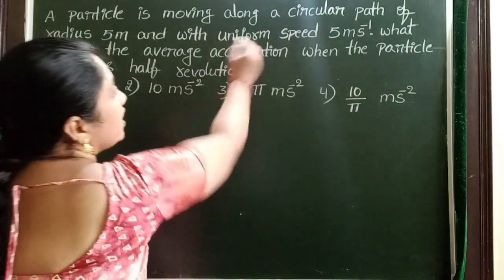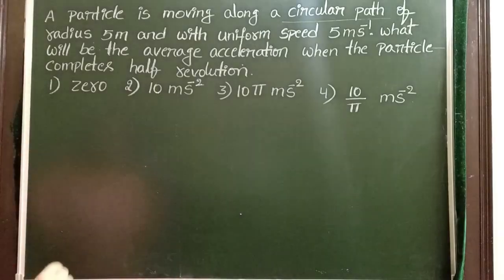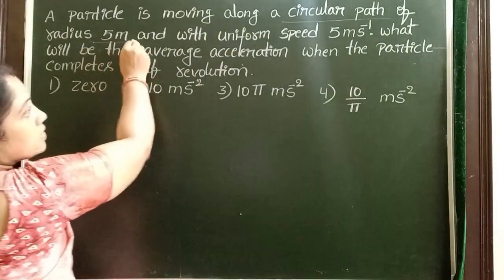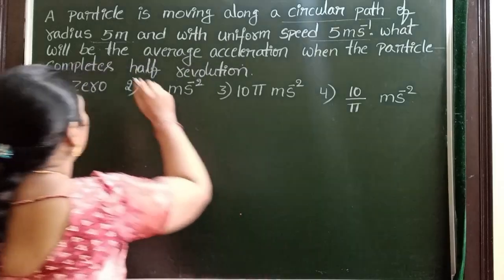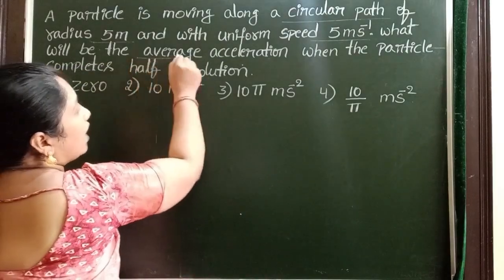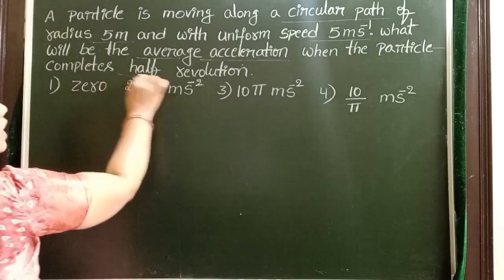A particle is moving along a circular path. Radius of the circular path is 5 meters with a uniform speed 5 meter per second. What will be the average acceleration when the particle completes half revolution?